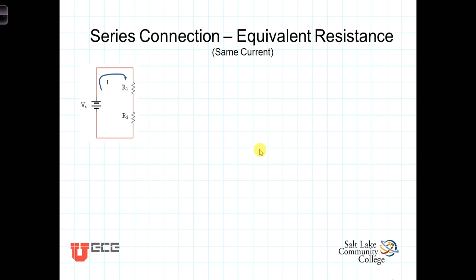In this video, we're going to look at resistors that are connected in series and derive a relationship for coming up with equivalent resistance for two resistors in series or for N-resistors in series. Our functional definition for devices connected in series is that they have the same current flowing through them. These two resistors are in series because the current I that flows through R1 has no place to branch but continues on through R2 also. Thus the currents are the same.